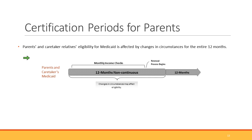For parent or caretaker relatives, with the Affordable Care Act they also got 12 months of eligibility, but they do not have any segment of continuous eligibility at any point during their certification. If they have a change in circumstance it can affect their eligibility — if income goes up or household size changes, they could potentially lose eligibility for Medicaid. They get 12 months of non-continuous eligibility and income checks monthly all the way up until renewal begins in month 9 or 10, so they may have requests for information if electronic data makes them look potentially ineligible.